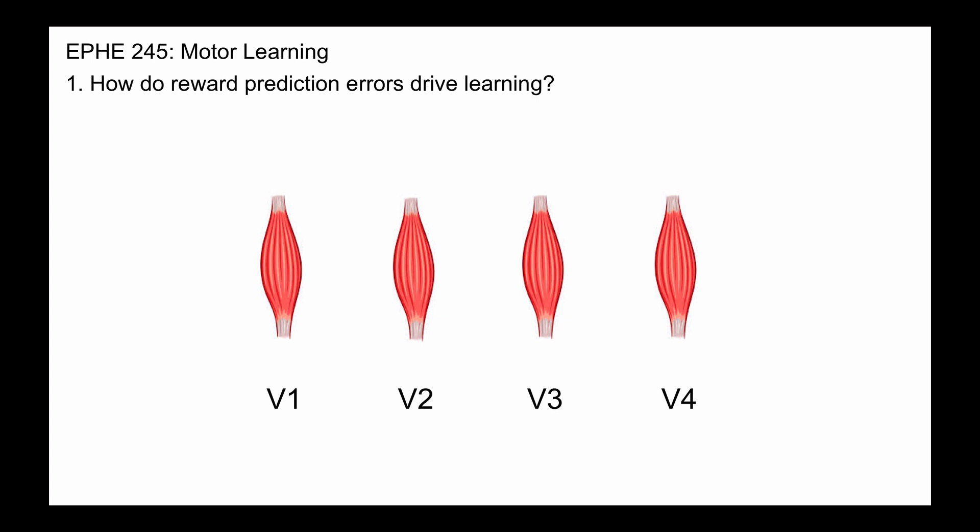And the ones that we use, we want to strengthen. So imagine you hit the golf ball and it goes well. Well then you want to strengthen the muscles that you used and the value for choosing that muscle. And if it goes poorly, the opposite would be true, and you would want to weaken, with a negative prediction error, the choices that you made, or literally, the muscles that you used.